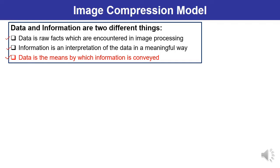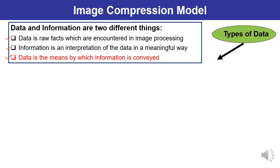The types of data that are encountered in image processing are known as multimedia data. Let us discuss the types of data which are actually encountered in image processing, now known as multimedia data.